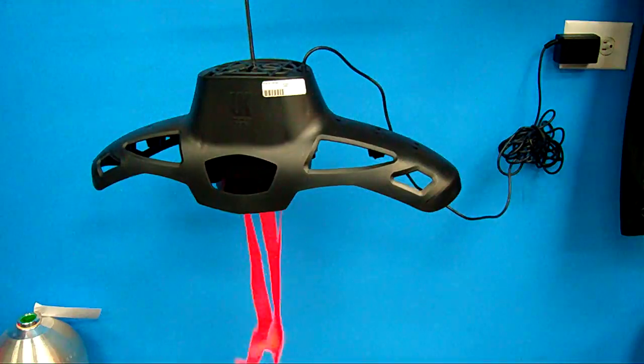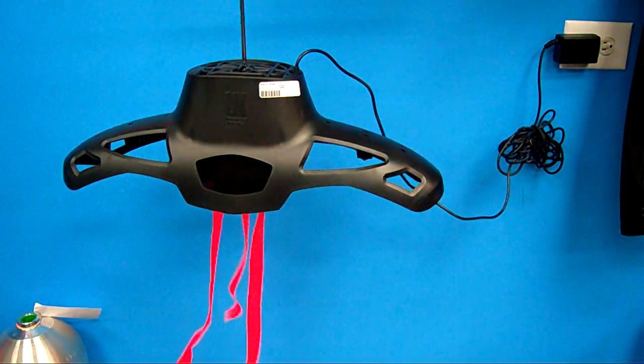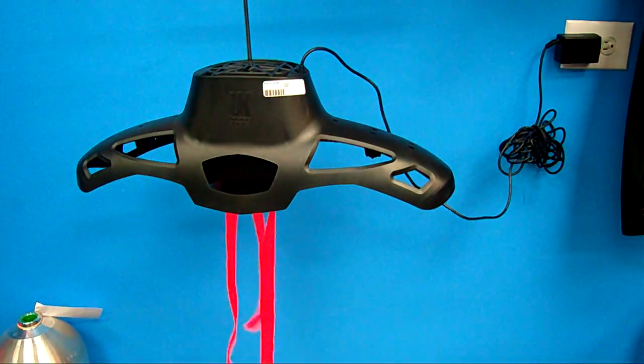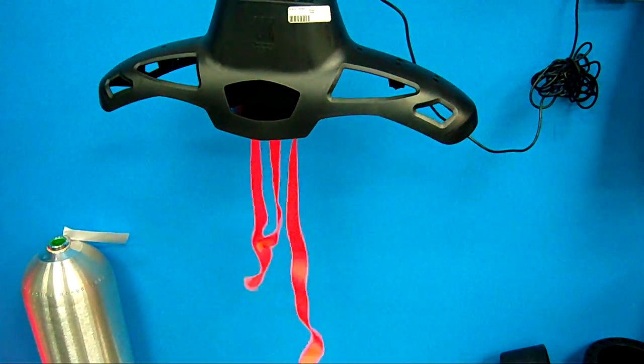It has 120 cubic feet per minute of air output. Also comes with a 12 foot long cord, so no matter where that outlet is, you can reach it. You can see the air volume that that thing is pushing out, too.